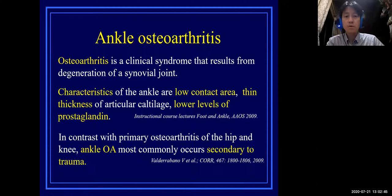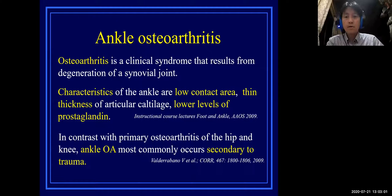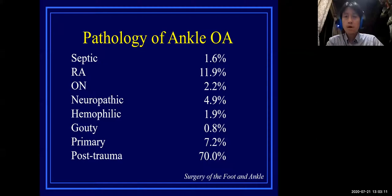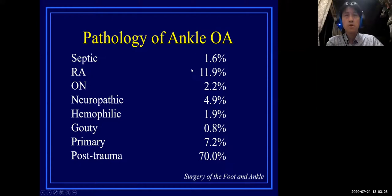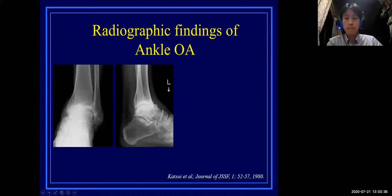Osteoarthritis is a clinical syndrome that results from degeneration of the synovial joint. Characteristics of the ankle are low contact area, thin articular cartilage thickness, and lower levels of post-prosthetic loading. Ankle OA most commonly occurs secondary to trauma, in contrast with hip and knee. Trauma is the most frequent etiology at 70%, rheumatoid arthritis at 11.9%, with primary, neuropathic, and osteonecrosis etiologies following subsequently.